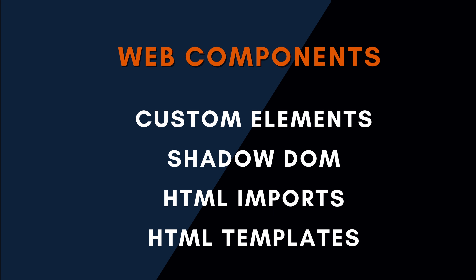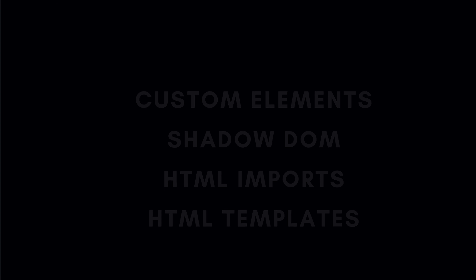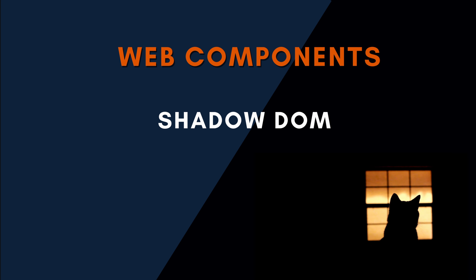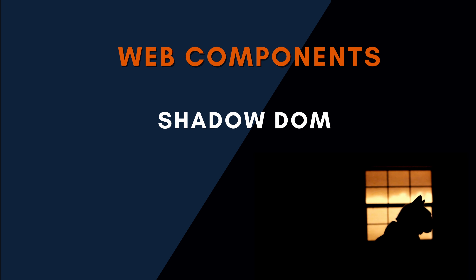These four elements are: custom elements, shadow DOM, HTML imports, and HTML templates. With custom elements you can create custom HTML tags and elements — each element has its own CSS style and script. The only standard required is to put a hyphen in the name to avoid conflicts with new HTML elements. The shadow DOM combines HTML, CSS, and JavaScript inside a web component, separated from the main document's DOM. The main method of communication between web components is by firing events.